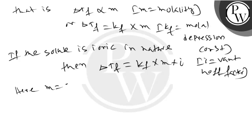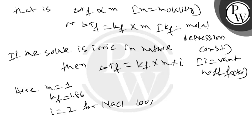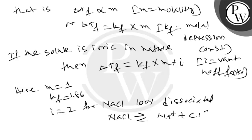Here, M is equal to 1, Kf is equal to 1.86 and i is equal to 2 for NaCl 100% dissociated. NaCl dissociated as Na plus plus Cl minus. That is why i value is 2 because it produced two ions on dissociation.